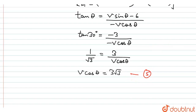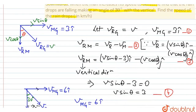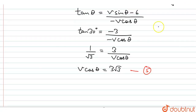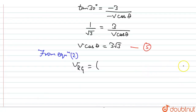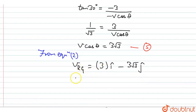From equations 4 and 5, I substitute into equation 2, which is the key equation for the velocity of rain with respect to the ground. Substituting v sine theta equals 3 and v cos theta equals 3 root 3, the velocity of rain with respect to the ground becomes: 3 i-cap minus 3 root 3 j-cap. Now let us find the magnitude of this velocity.